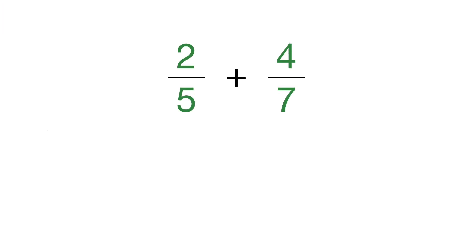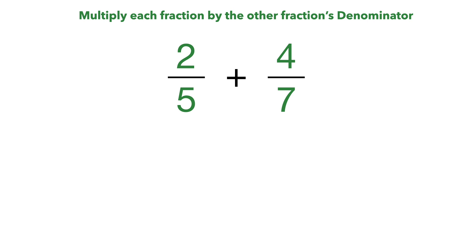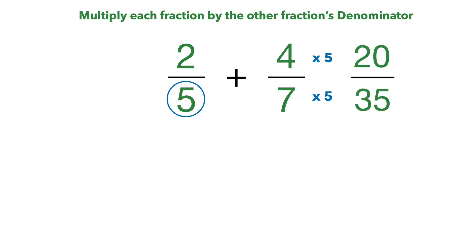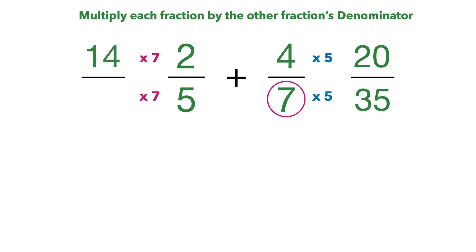We're going to take 2 fifths plus 4 sevenths. These do not have like denominators, so the first thing we do is get them the same. When dealing with numbers like this, I use the strategy of multiplying each fraction by the other fraction's denominator. So for 2 fifths, the denominator is 5, so we multiply the entire fraction 4 sevenths by 5: 4 times 5 is 20, 7 times 5 is 35. Then for 2 fifths, we multiply by the other fraction's denominator of 7: 2 times 7 is 14, 5 times 7 is 35. Now we have common denominators of 35, so we can add them.